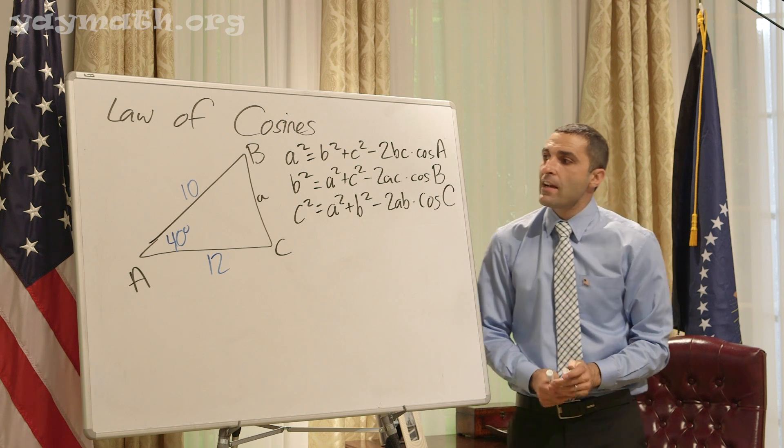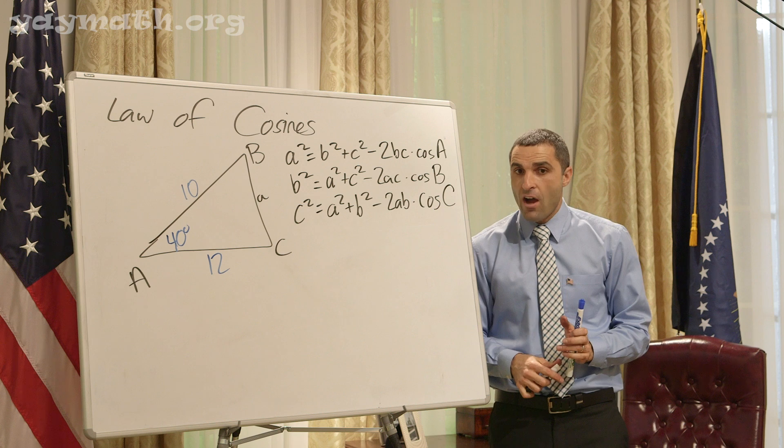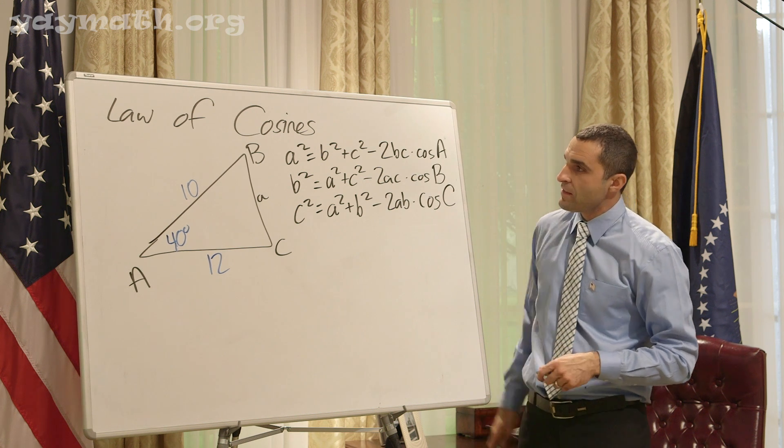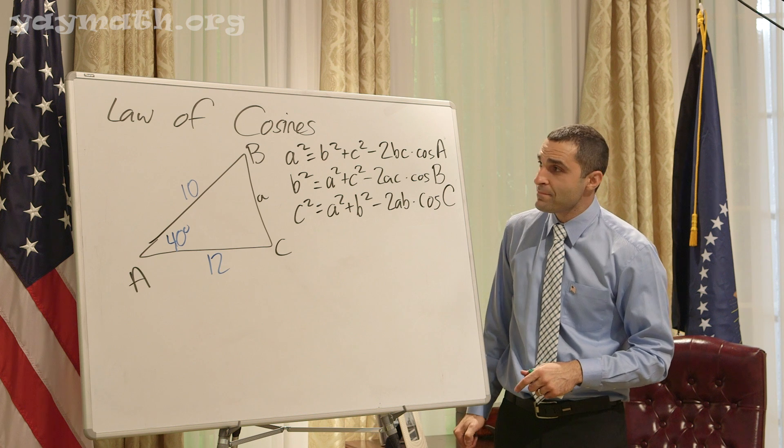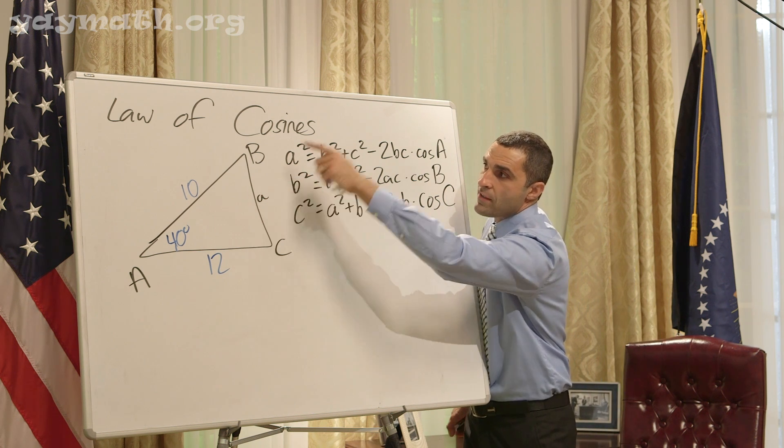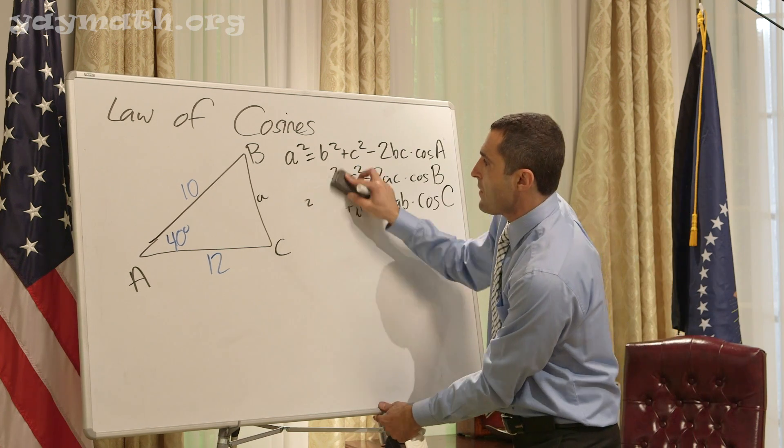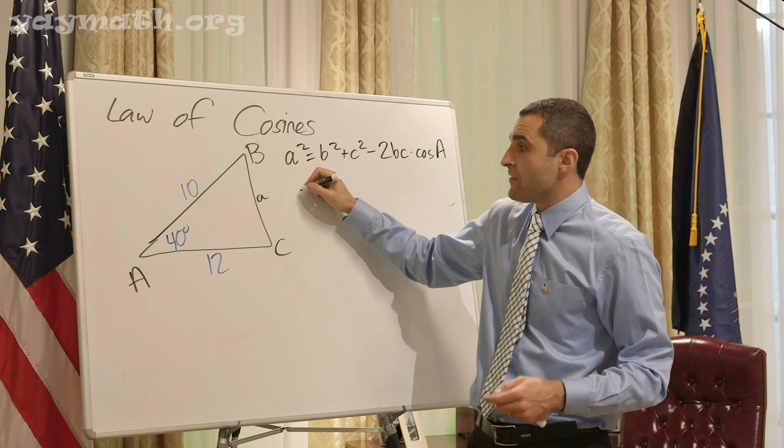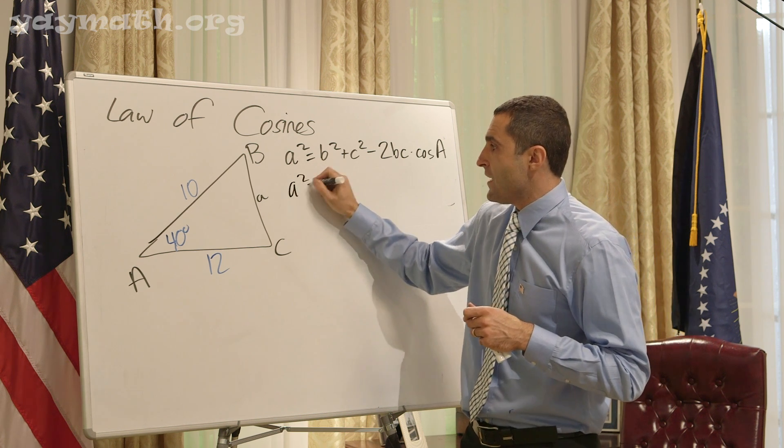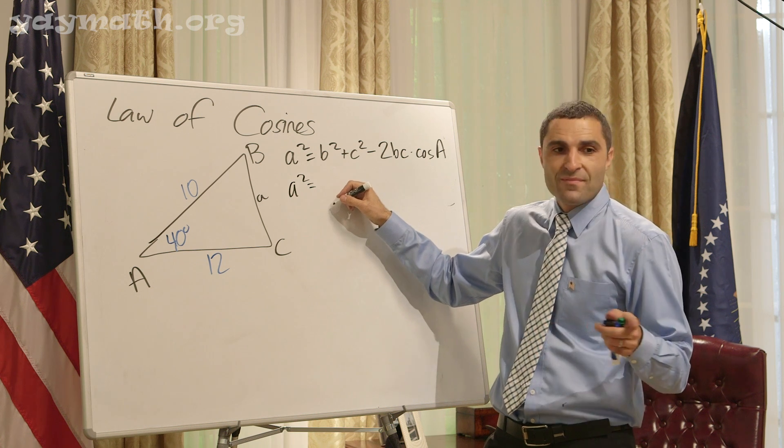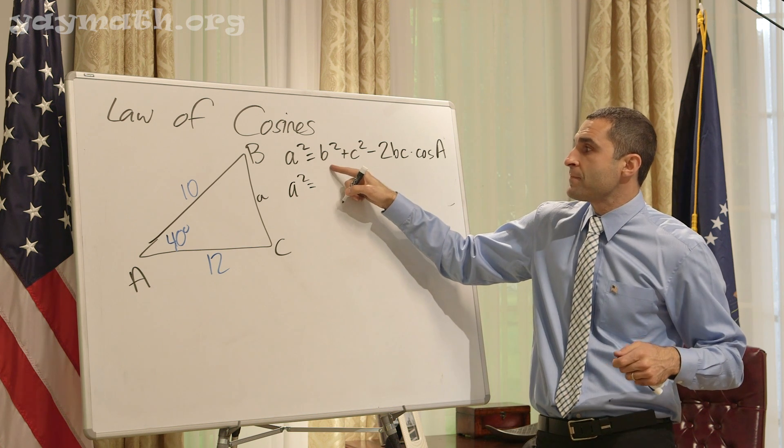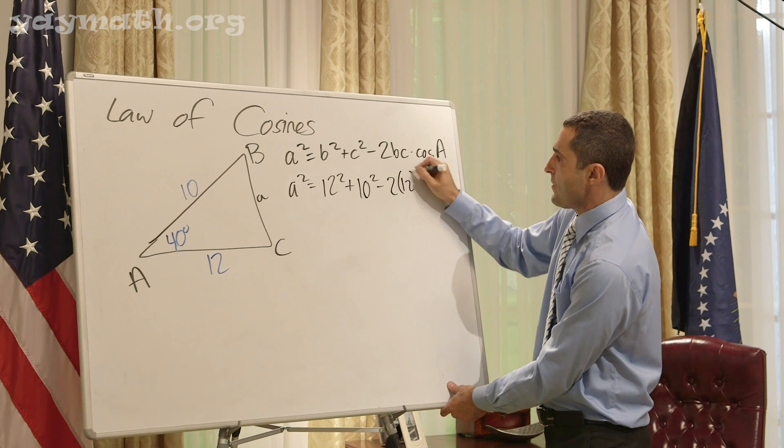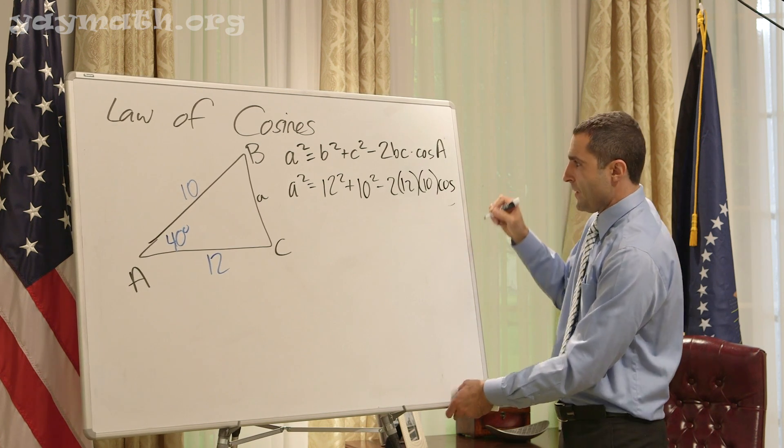In this situation, what is the variable we can isolate and what do we know? Which formula should we start with? a. That's right. If we start with a², that's isolated, and we can throw in all this other stuff. a² = b² + c², which is 12² + 10² - 2 × 12 × 10 × cos 40.